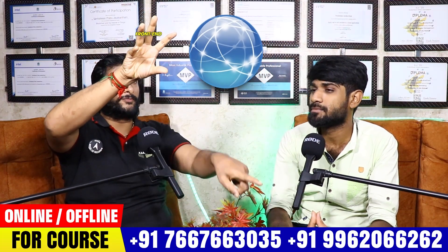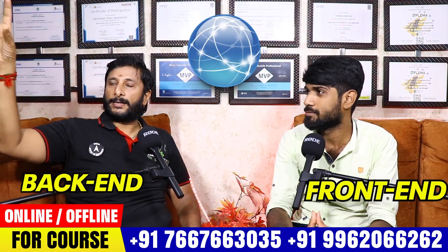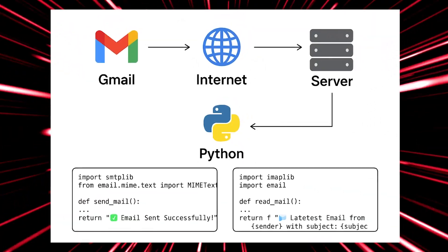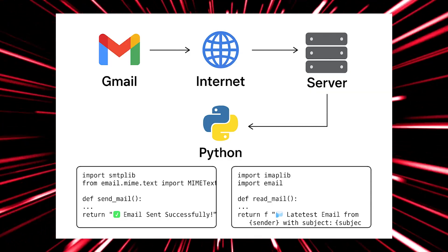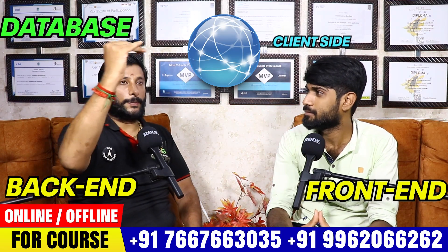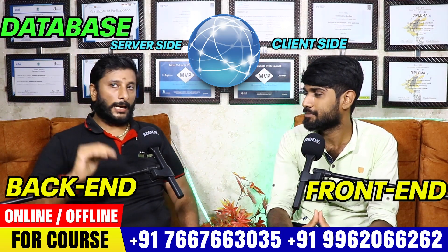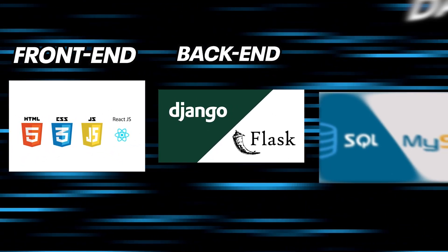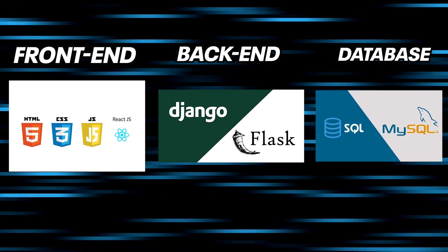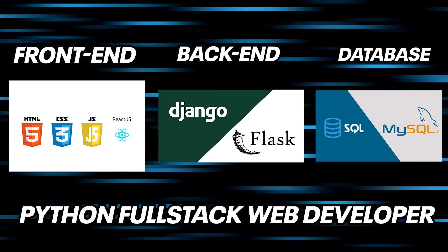This is the internet. You can use front-end, back-end, and database. You can use a user Gmail account and send a request to the internet. You can use the server, make a request to the database, and return data. This is the concept. The client uses the server, the server uses the database. You can use HTML, CSS, JavaScript, and React for front-end. You can use the Django framework for back-end. You can use MySQL as the database. This is Python as a full-stack web developer.